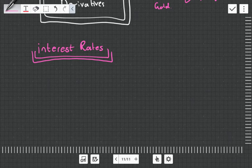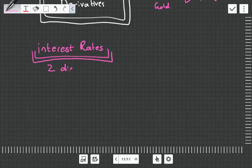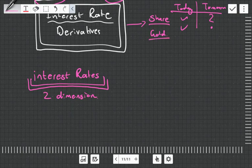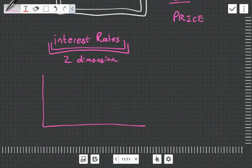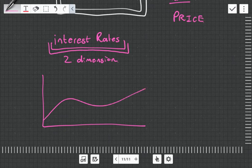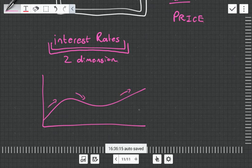Why is this more complicated than shares or gold? Because interest rates are two-dimensional. When we look at a share or gold, we're just looking at the price. When we look at an interest rate, we're actually looking at a curve, known as the interest rate curve.